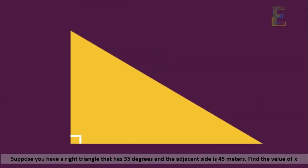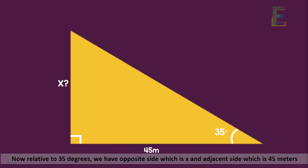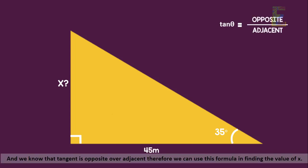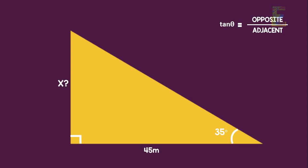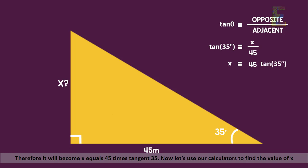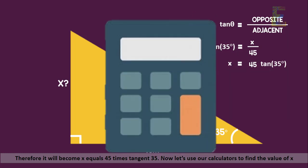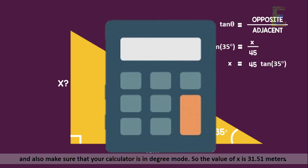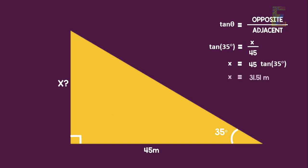Let's try another example. Suppose you have a right triangle with a 35-degree angle and the adjacent side is 45 meters. Find the value of x. Relative to 35 degrees, the opposite side is x and the adjacent side is 45 meters. Since tangent equals opposite over adjacent, we use that formula. The equation becomes: tan 35° = x / 45. Multiplying both sides by 45, x = 45 × tan 35°. Using a calculator in degree mode, x equals 31.51 meters.